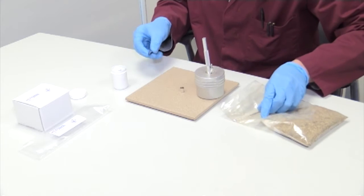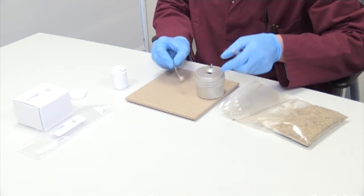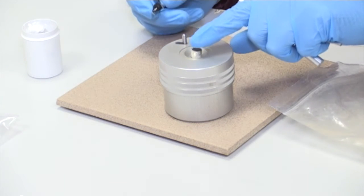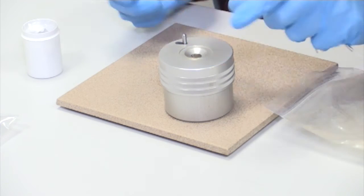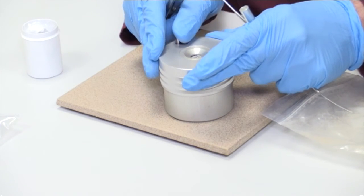The capsule plus sample is placed in the cavity at the top of the sealing device and pushed into place. Operating the lever causes the top of the capsule to be crimped shut.